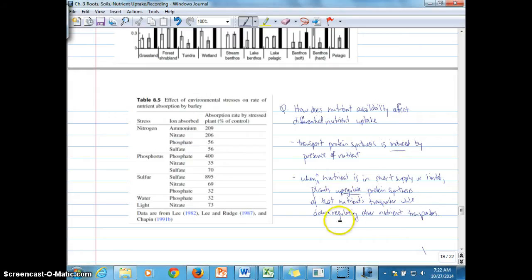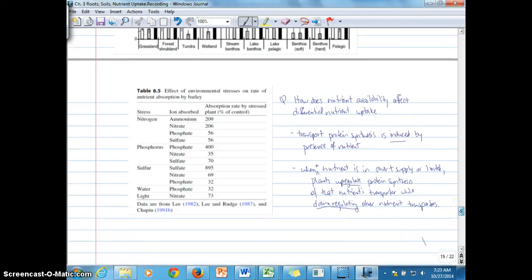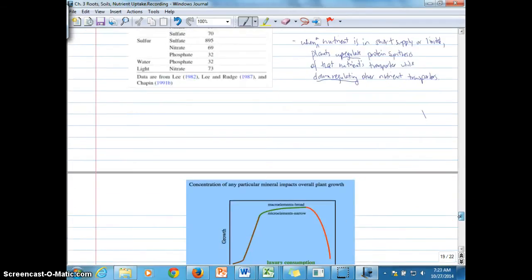And also downregulates other transporters. All right. So that shows, that helps us understand why we see these different rates of uptake, the different allocation of uptake towards the nutrient in limited supply.